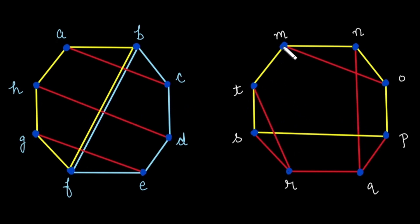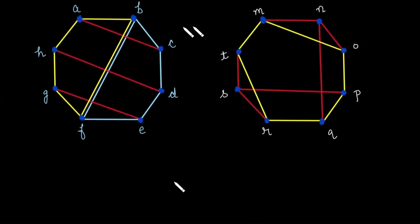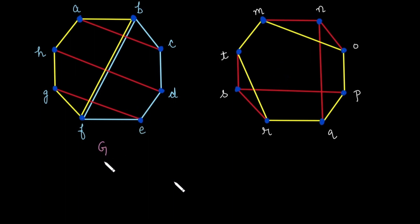After further inspection, in graph G there exist two simple circuits of length 5, whereas in graph H there does not exist any simple circuit whose length is 5. So with this we can say that G is not isomorphic to H.